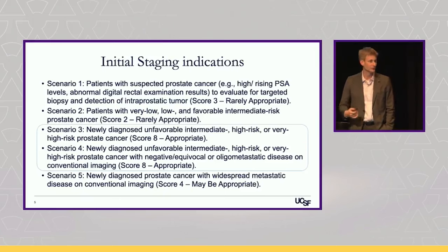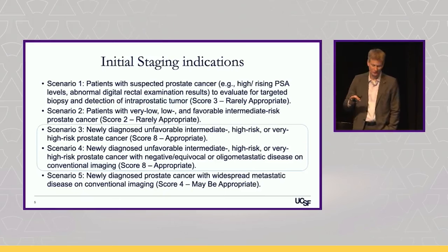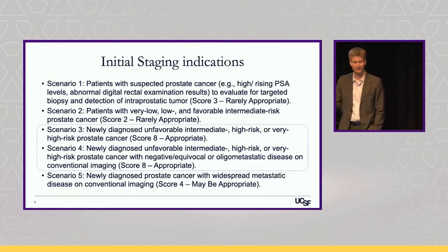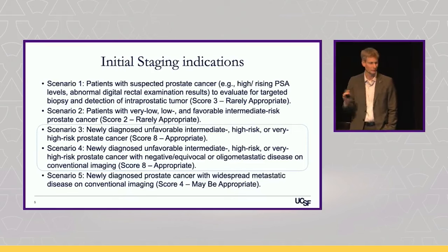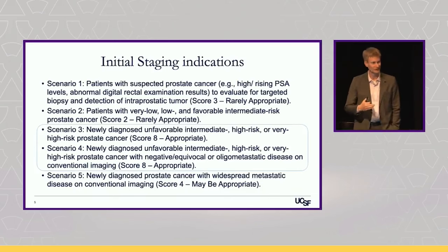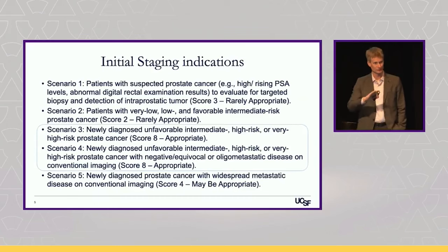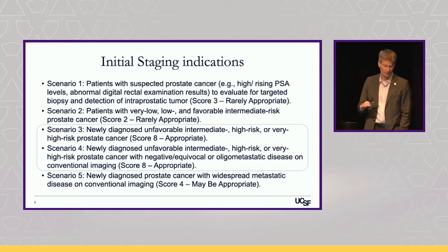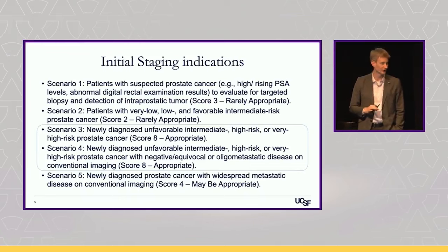We agreed that newly diagnosed unfavorable intermediate, high risk, and very high risk patients — and also those who are negative or oligometastatic on conventional imaging — should be imaged with PSMA PET. Interestingly, the studies supporting scenarios three and four didn't really include unfavorable versus favorable intermediate risk. There's actually no data on PSMA PET stratified between favorable and unfavorable; that came out essentially to match NCCN guidelines, which had CT and bone scan for unfavorable patients. In the OSPREY trial, intermediate risk patients weren't included at all, and in the UCSF/UCLA study we had very few intermediate risk patients.